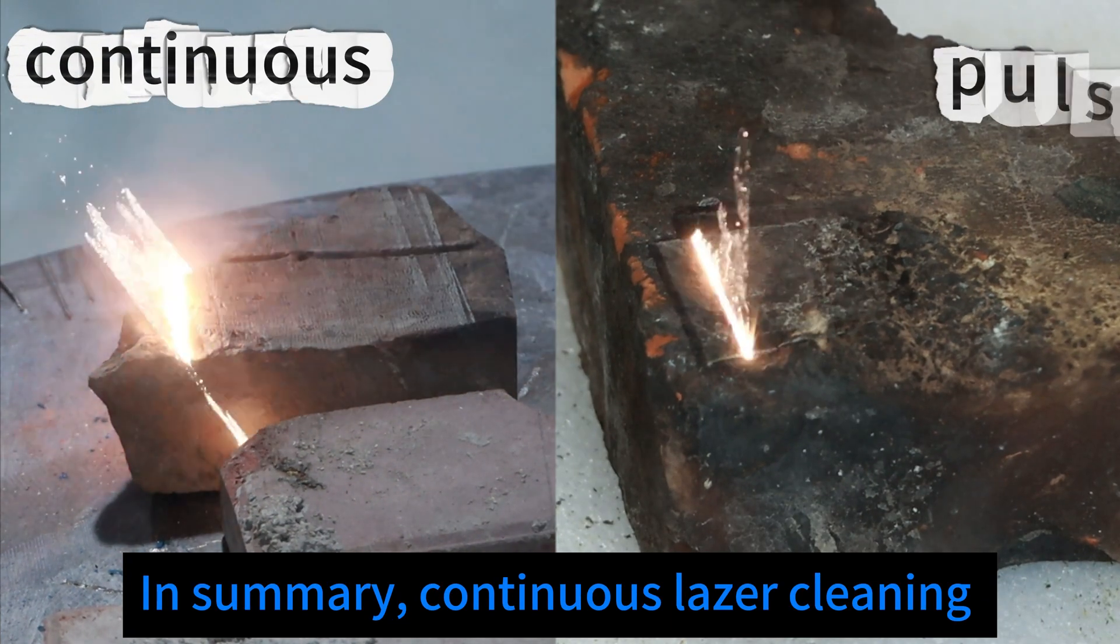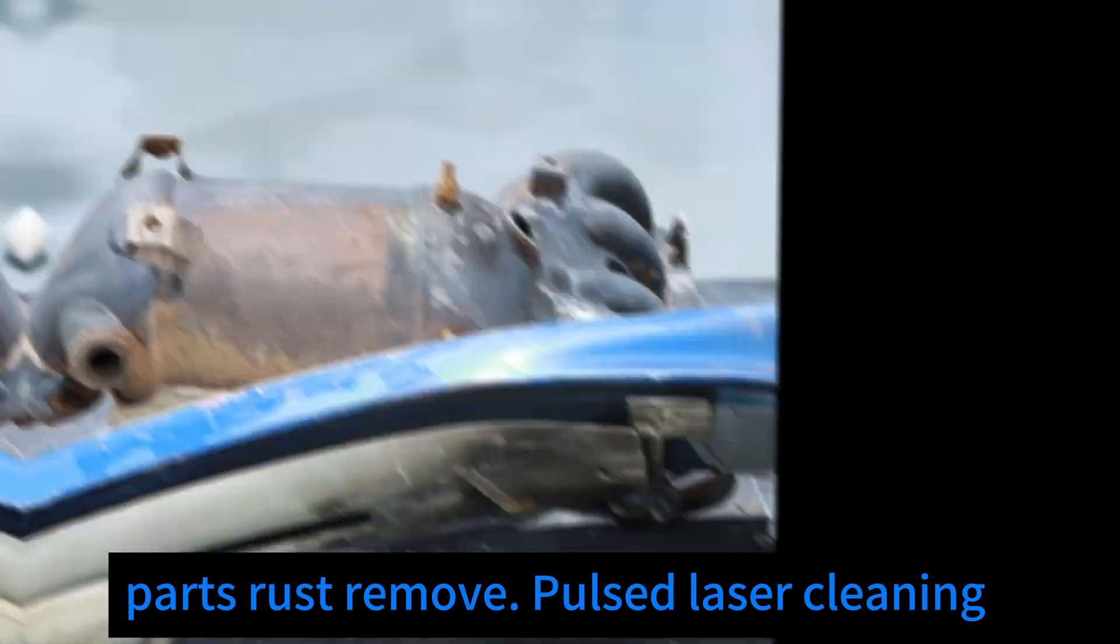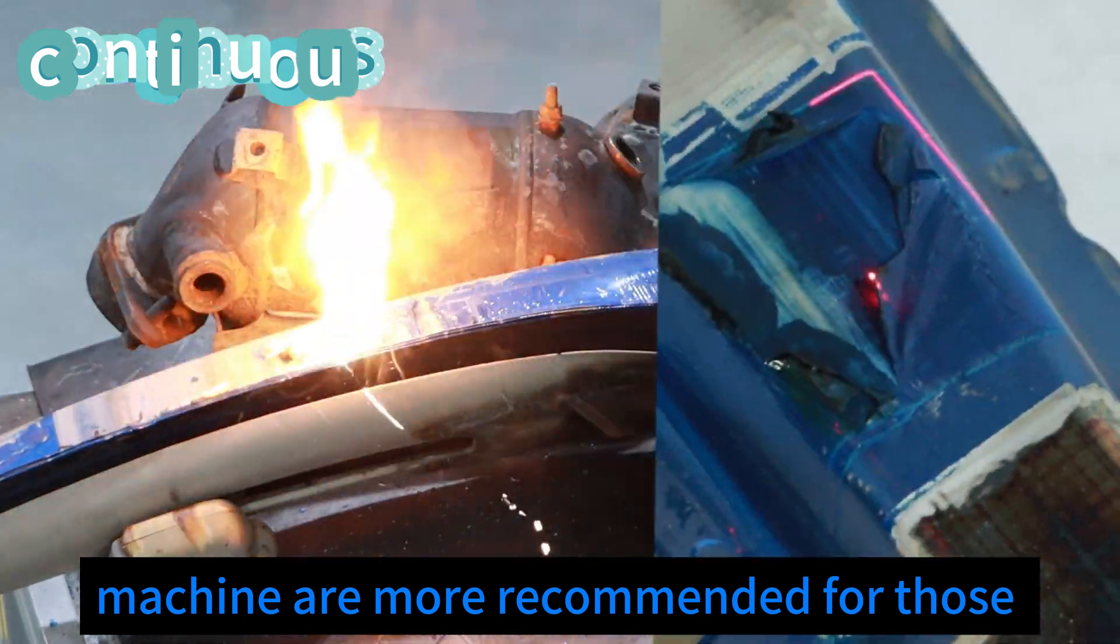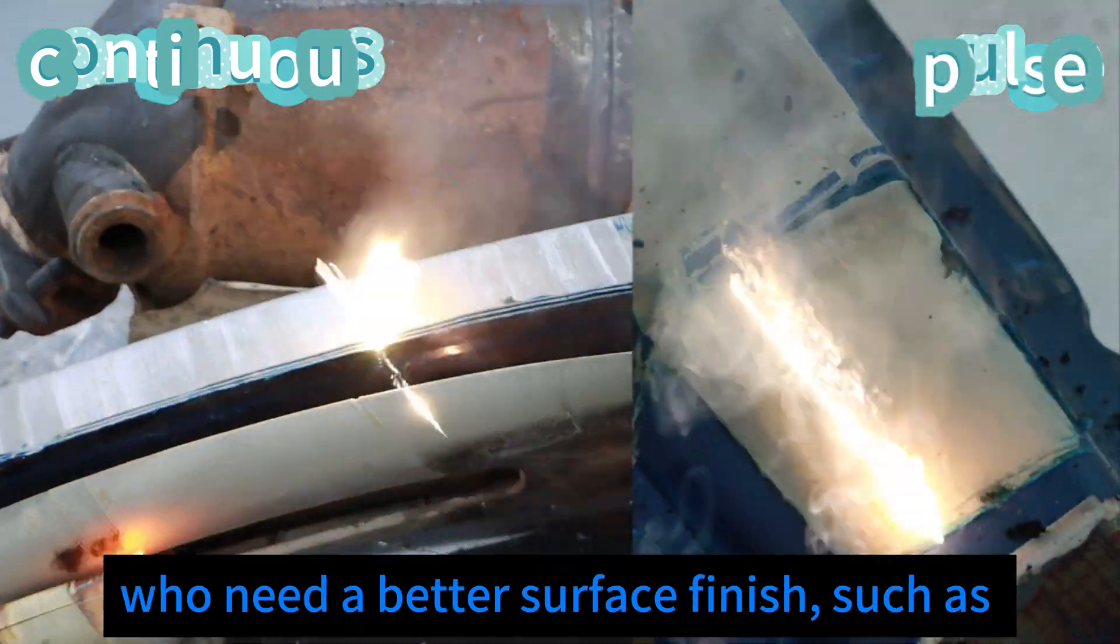In summary, continuous laser cleaning machines are a good choice for large metal parts rust removing. Pulse laser cleaning machines are more recommended for those who need a better surface finish, such as paint removal.